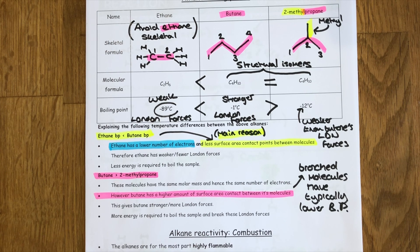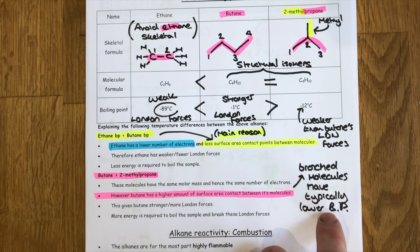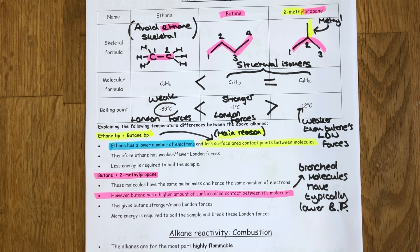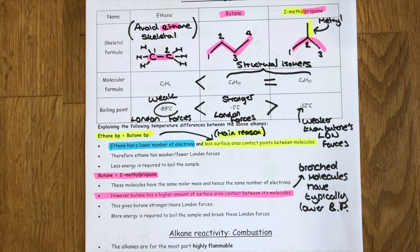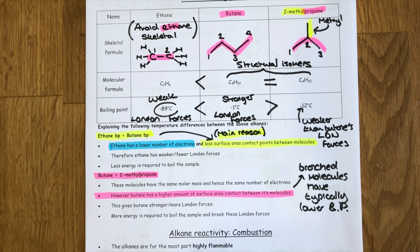That's the same explanation as why 2-methylpropane has got a lower boiling point than butane. 2-methylpropane is an example of a branched alkane and branched molecules typically have lower boiling points because they have fewer surface area contact points between molecules. Butane has a higher amount of surface area contact between its molecules giving it stronger or more London forces.